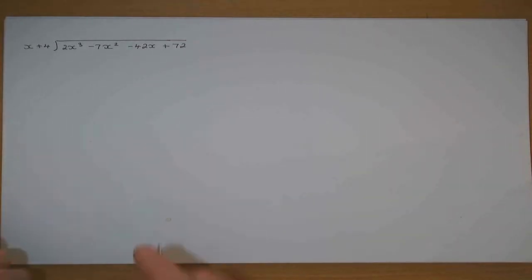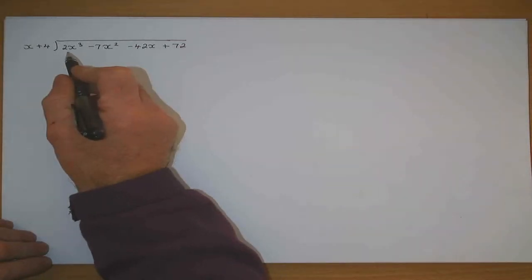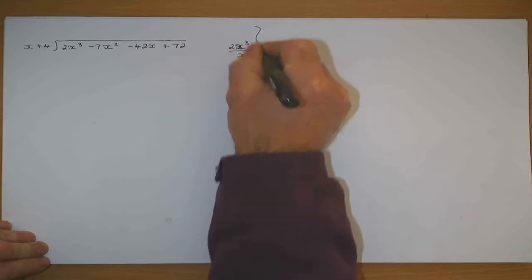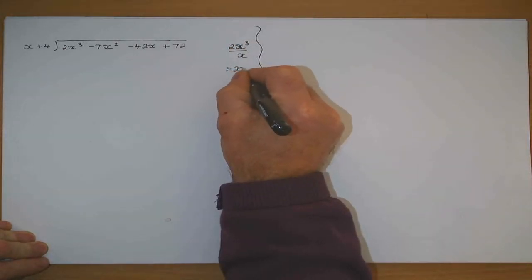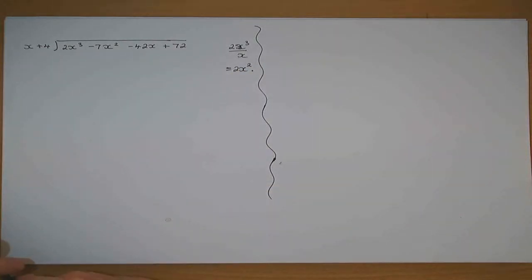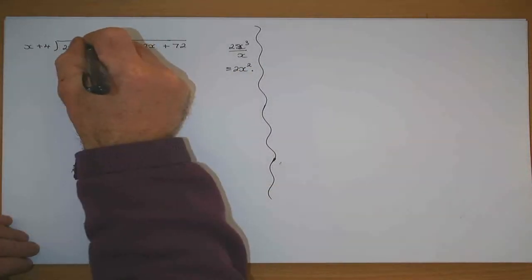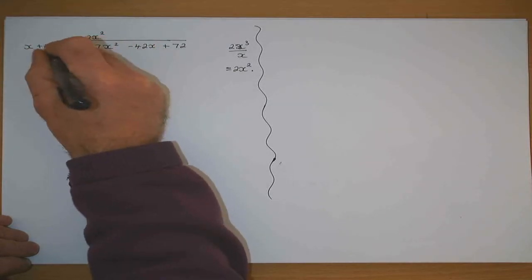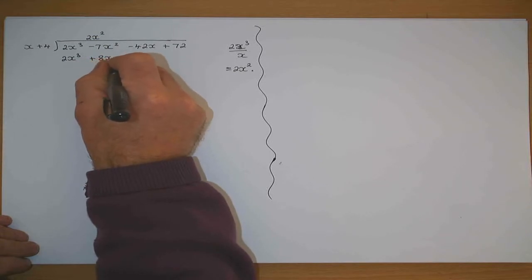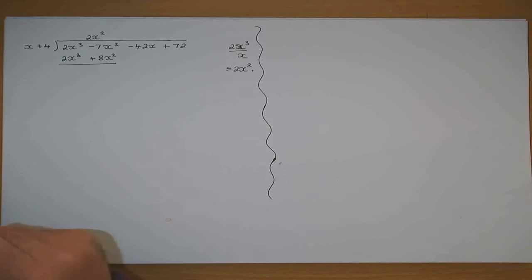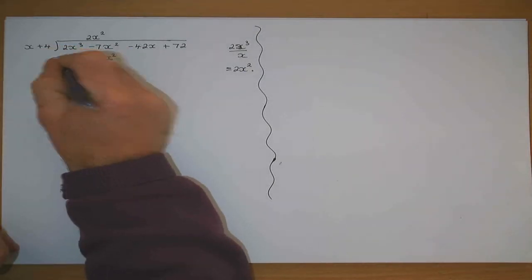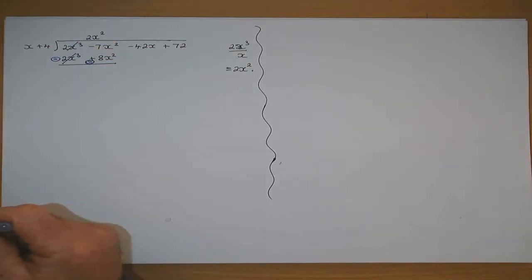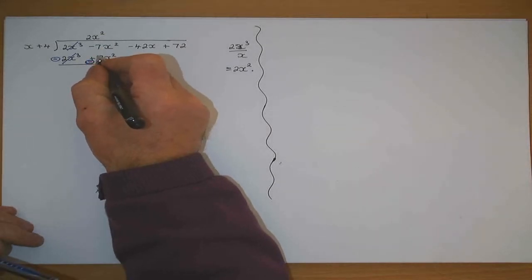To start this, I say x divided into 2x cubed. 2x cubed divided by x — the answer is 2x squared. So x goes into 2x cubed, 2x squared times. 2x squared by x gives 2x cubed, and 2x squared by that plus 8x squared. Now change the sign on the lower line — that becomes a minus and that becomes a minus. 2x cubed minus 2x cubed, this was plus and it became minus.